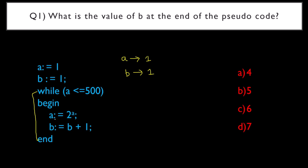In the first iteration, a := 2 power a. Since the value of a is 1, 2 power 1 is 2. So a becomes 2. Then b := b + 1, so the value of b becomes 2.